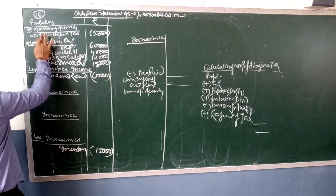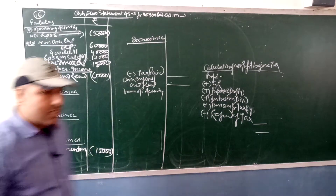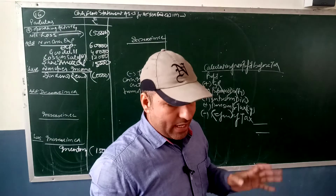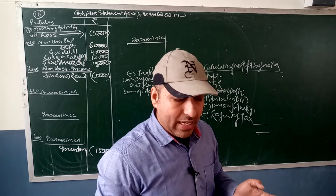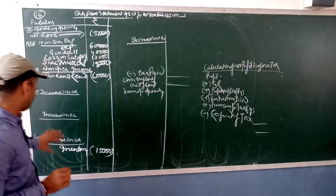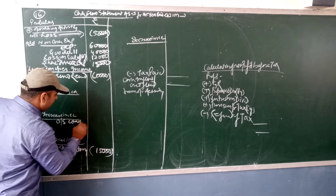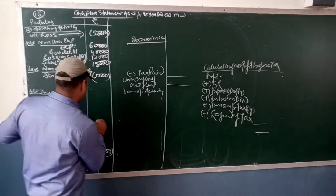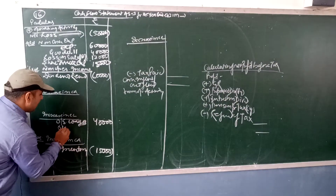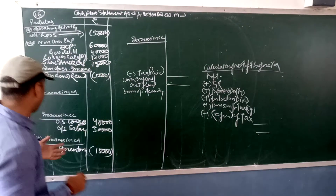We have a net loss of 50,000 here, so write net loss 50,000. Now let's check what working capital changes are given. Outstanding wages have increased — outstanding means current liability — outstanding wages is 40,000, so this goes to plus. Outstanding salary is 30,000 increase, so plus 30,000. Prepaid expenses given is 3,000 increase — since prepaid is a current asset increasing, this goes to minus 3,000.